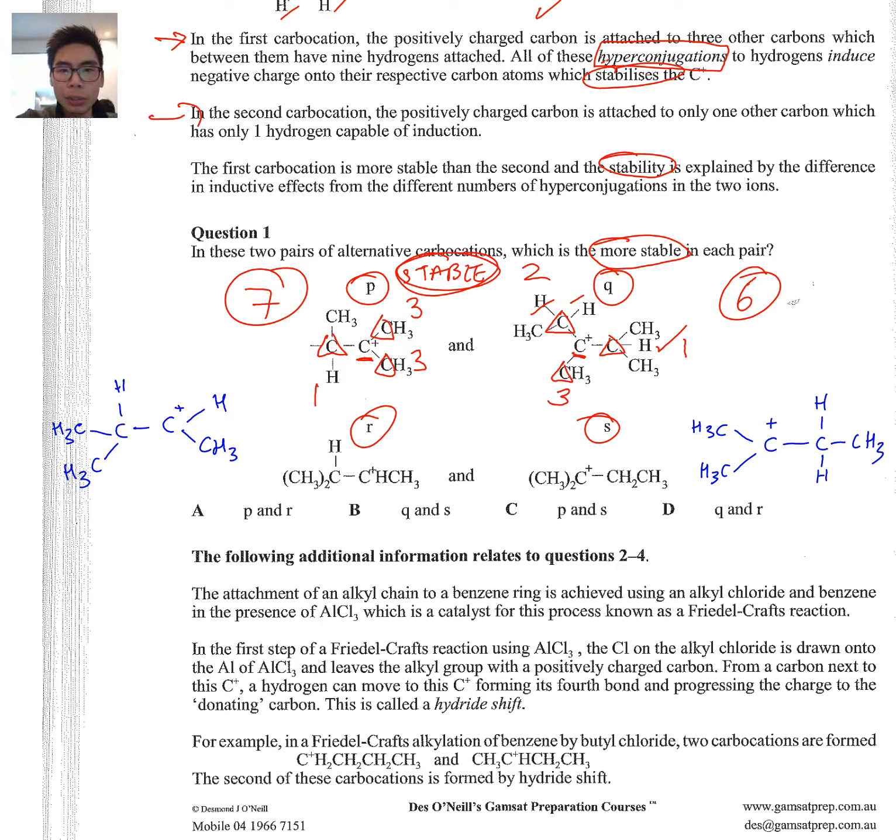Now, I've just pre-drawn the other molecules, R and S, and we'll just do the same thing. If we go to R, C+, that's the middle. Let's look at the neighboring carbons. It's only got two neighboring carbons, and if we count those, we have three here and we've got just a one over there. So that's a total of four hyperconjugations.